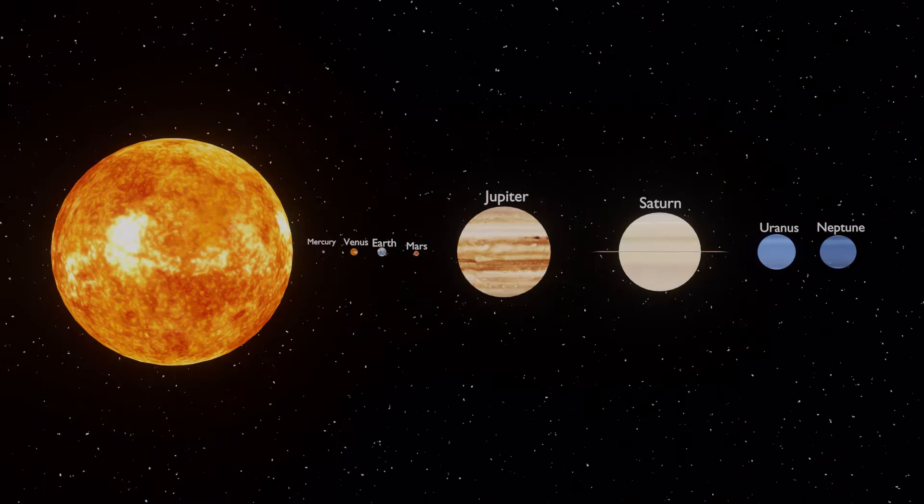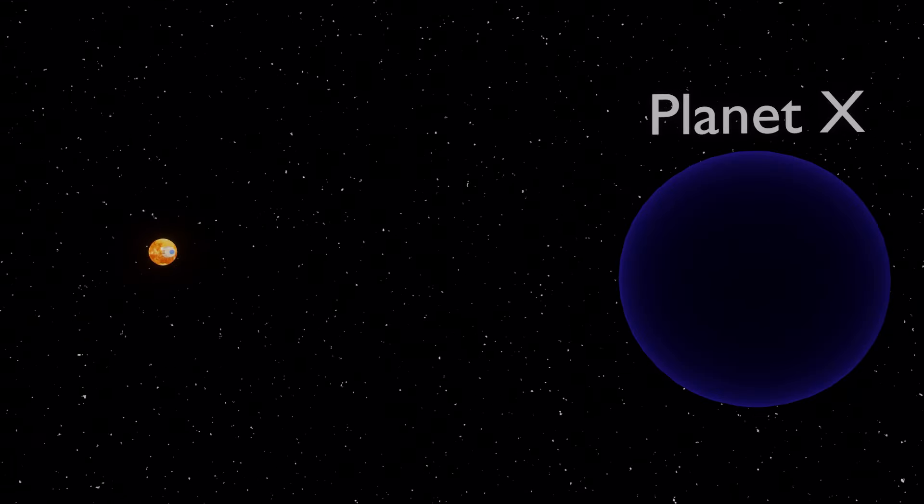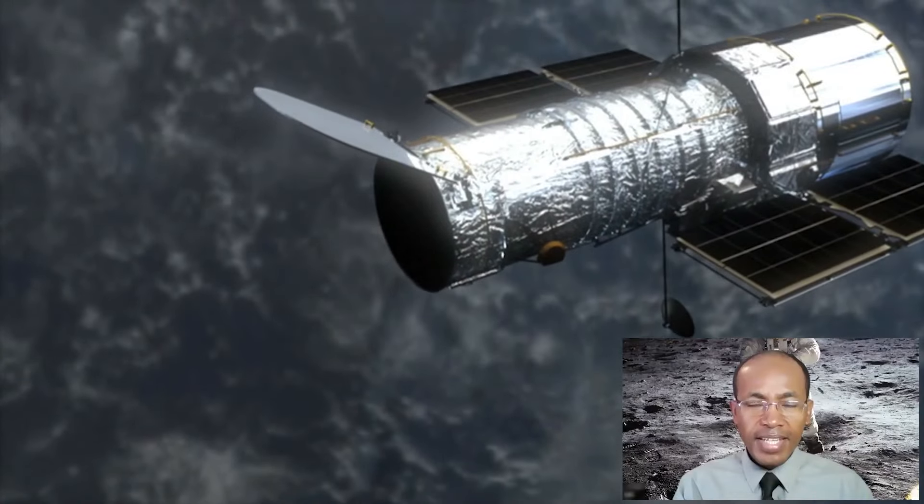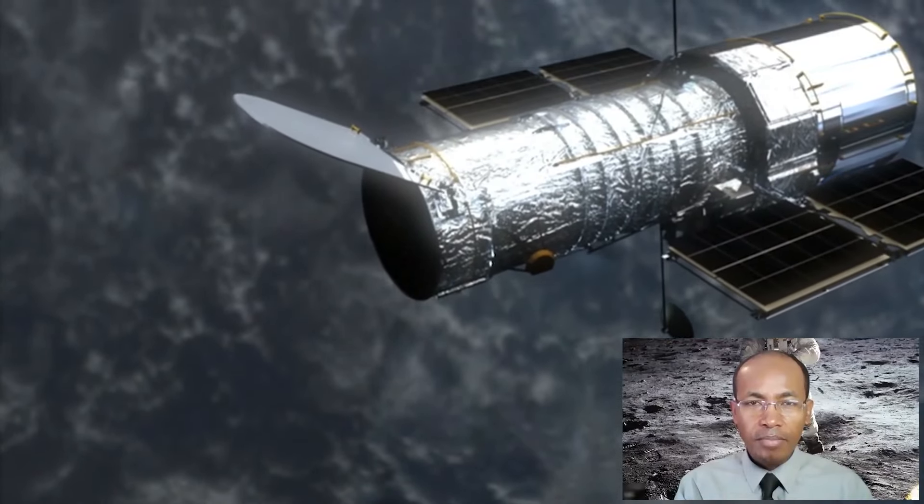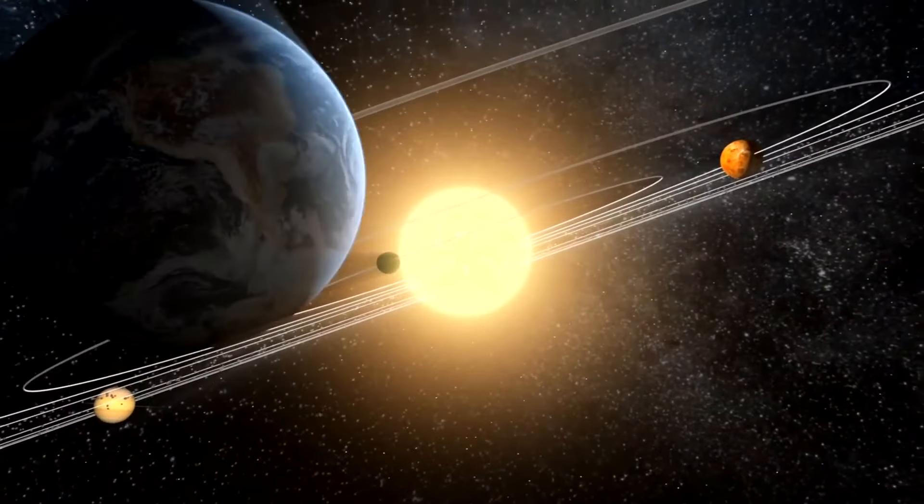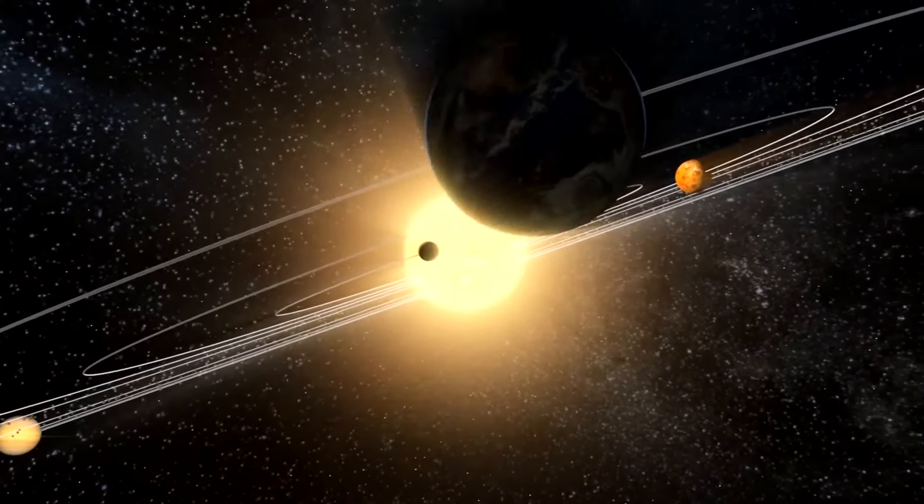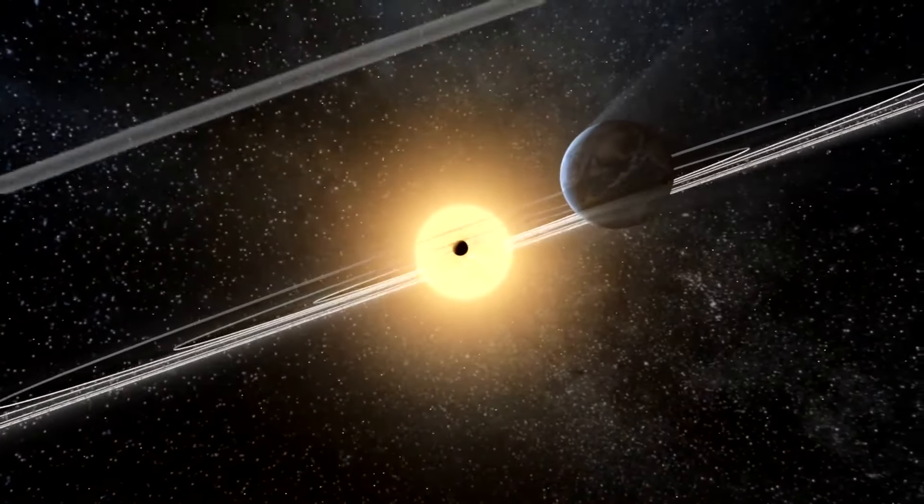The existence of this distant world is only theoretical at this point, and no direct observation of the object nicknamed Planet 9 have been made. The mathematical prediction of a planet could explain the unique orbits of some smaller objects in the Kuiper Belt.